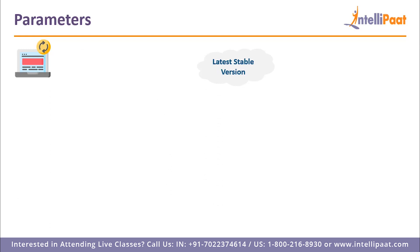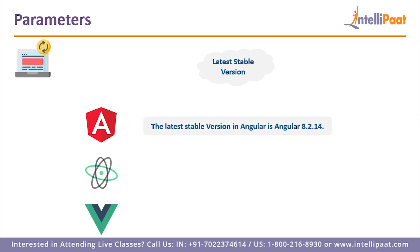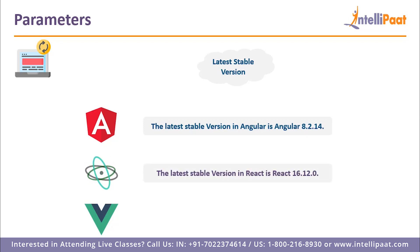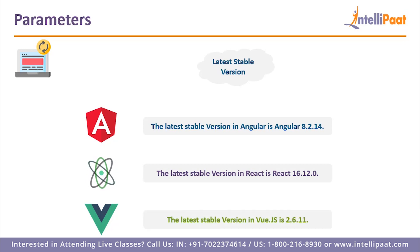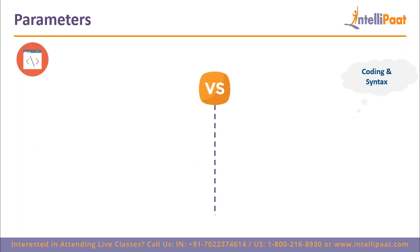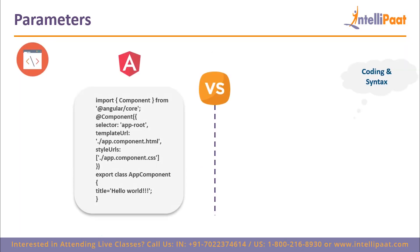Now let's look at the latest stable versions. For Angular, the latest stable version is 8.2.14. React.js is on its 16th version — 16.12.0. And Vue.js is on its second major version, with the latest stable release being 2.6.11.